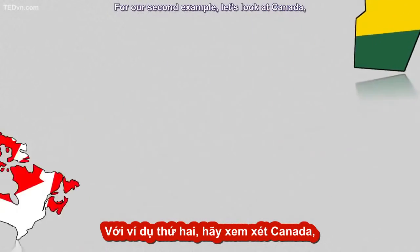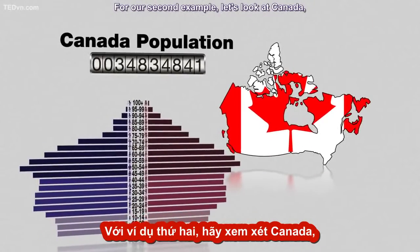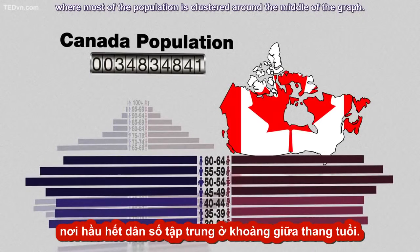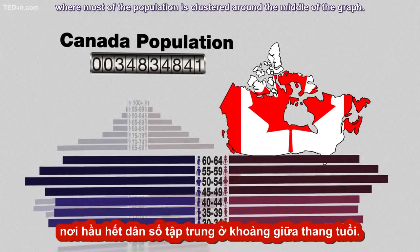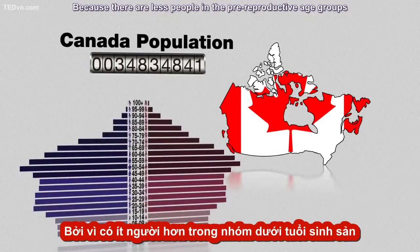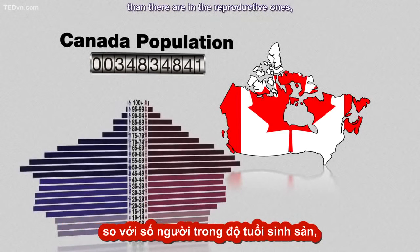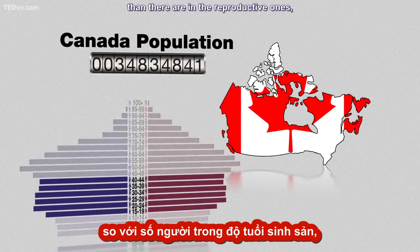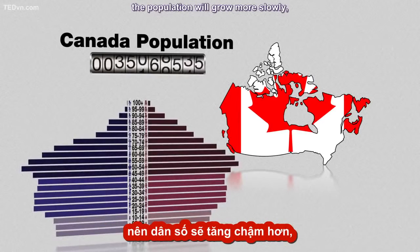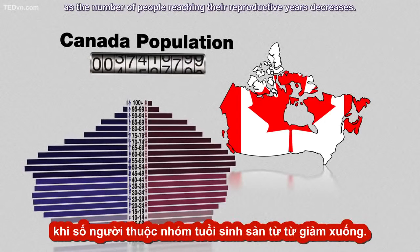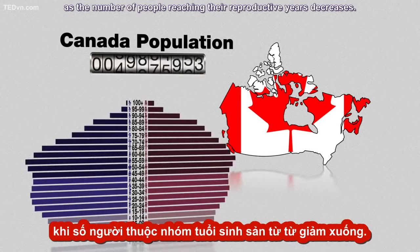For our second example, let's look at Canada, where most of the population is clustered around the middle of the graph. Because there are fewer people in the pre-reproductive age groups than there are in the reproductive ones, the population will grow more slowly, as the number of people reaching their reproductive years decreases.